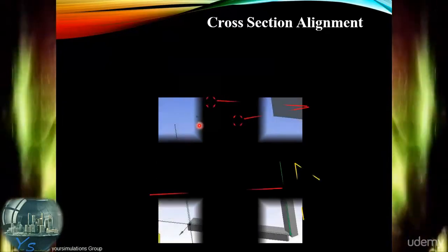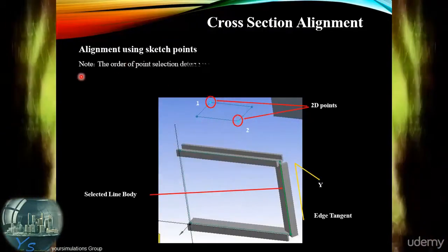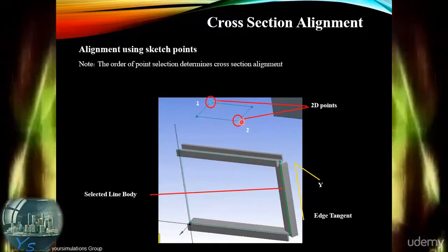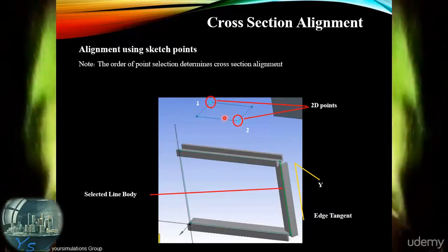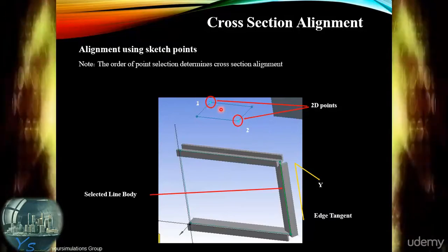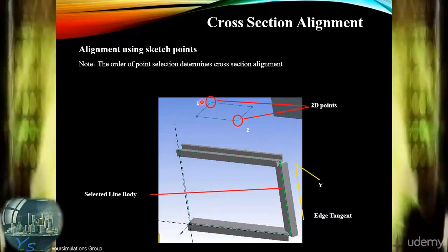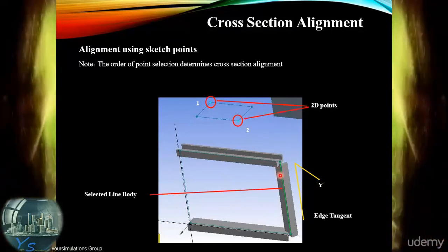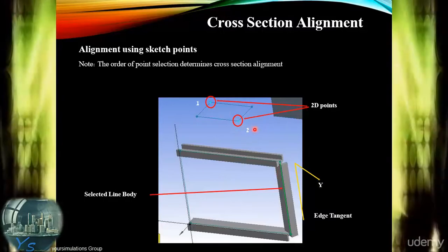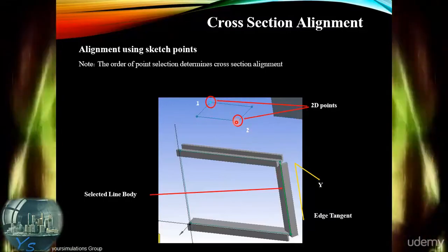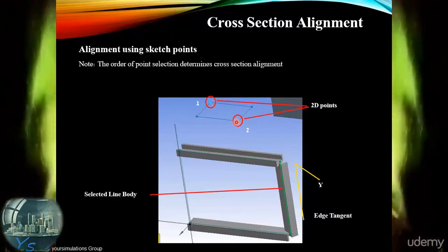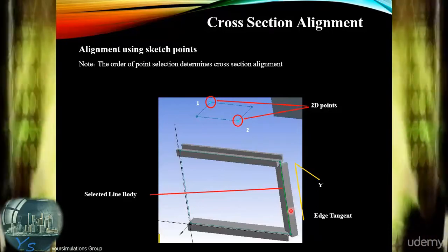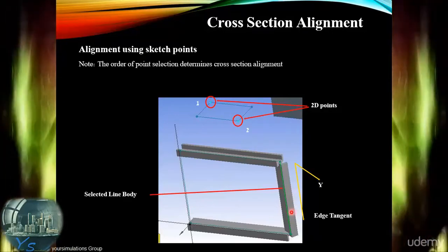In addition, we can also use sketch points. Using two sketch points, we effectively create a new vector by virtue of the angle and positioning between them. We can use that vector to infer a new alignment of the cross-section, as seen here with points one and two as the two sketch points selected, along with the line body to be affected.